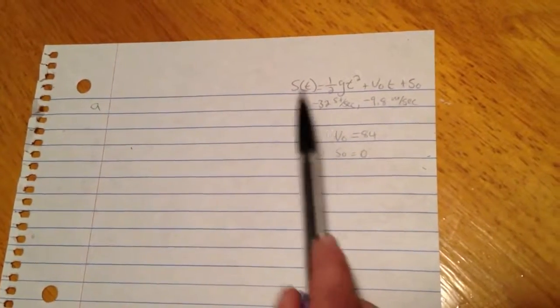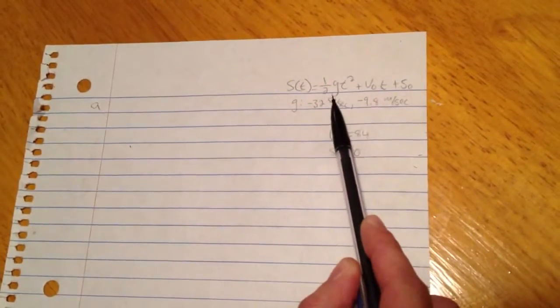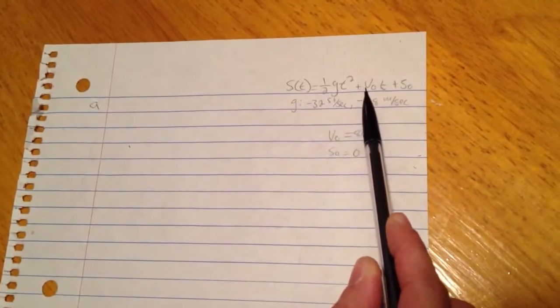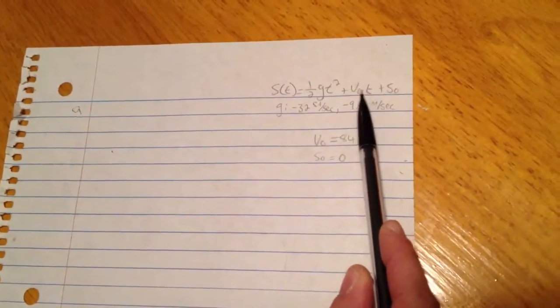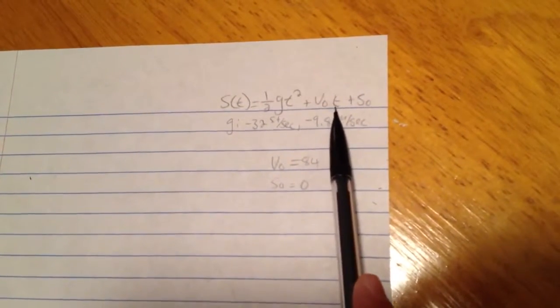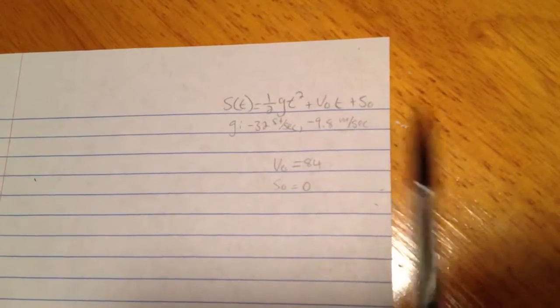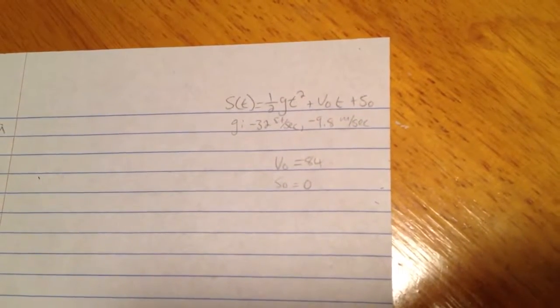So we start with s(t), which is equal to half of g times t squared, where g is gravity, plus v₀ times t, where v₀ is equal to velocity, and then plus s₀, which is equal to the position that it took off from.